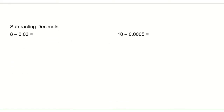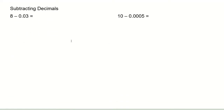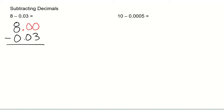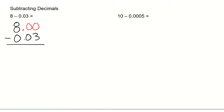So that was addition. Now we're going to do the exact same thing but with subtraction. If I have 8 minus 0.03, I'm going to put a decimal to the right of the whole number and add zeros as placeholders. Now this is a subtraction problem, so I've got 0 minus 3. Zero is smaller than 3, so that means I need to borrow to the left.